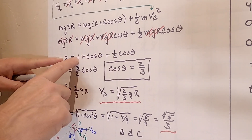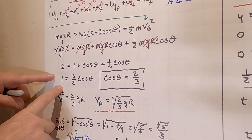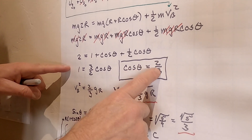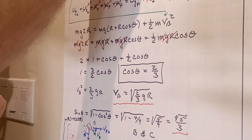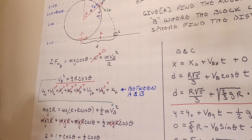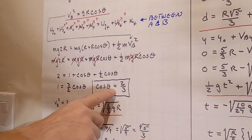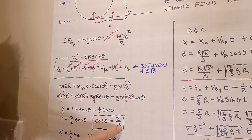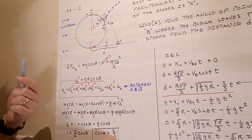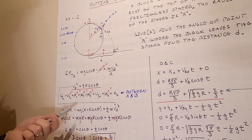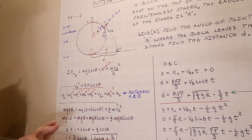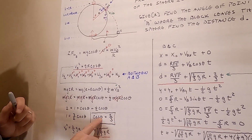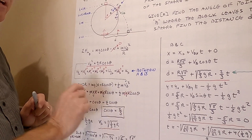Setting the energies equal: mg·2r = mg·r + mg·r·cosθ + ½·m·gr·cosθ. The m's, g's, and r's all drop out, leaving 2 = 1 + cosθ + ½cosθ. Bringing the 1 over and combining gives 1 = (3/2)cosθ, so cosθ = 2/3. This angle doesn't depend on the radius of the sphere or the mass — if I calculate it, it's about 41 degrees.